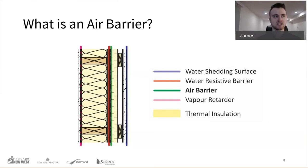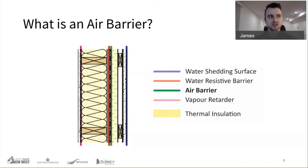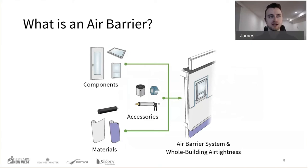To simplify the discussion, I'm pointing out the air barrier at the exterior face of the sheathing membrane — essentially a synthetic sheathing membrane like Tyvek or Typar, airtight and sealed around its edges and at penetrations. But the air barrier is actually more than just one line on a drawing. It's a combination of components, accessories, and materials all sealed and airtight to create the airtight enclosure all the way around the building.